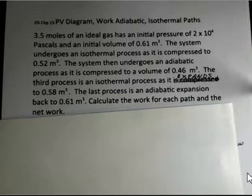First step is an isothermal process compressing the ideal gas down to 0.52 cubic meters. Then an adiabatic process, that means Q equals zero. The gas is further compressed to 0.46 cubic meters. The third process is isothermal and the gas is expanding back to 0.58 cubic meters, and lastly adiabatic expansion back to 0.61 cubic meters, back to our starting point.